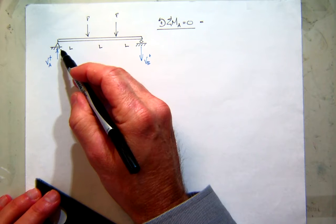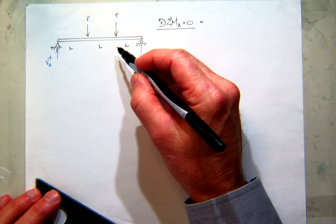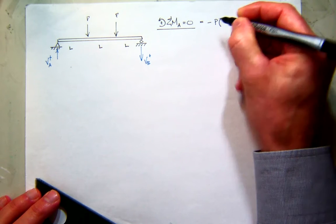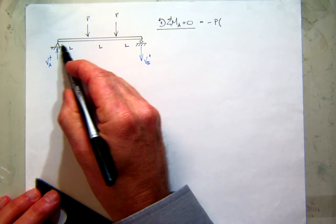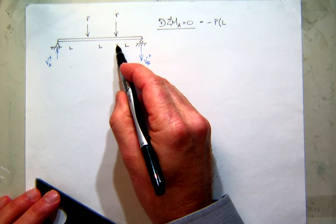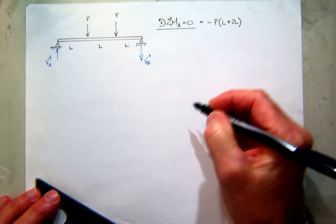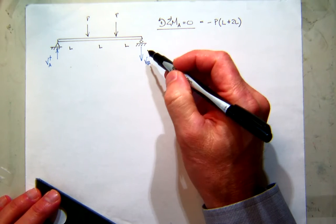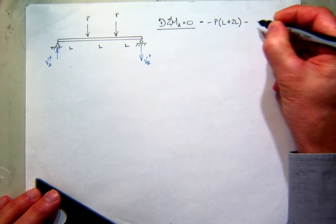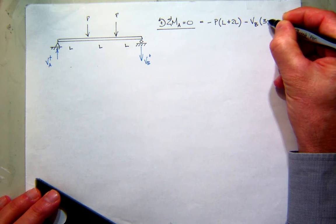Summing moments about A: both my applied forces, using the right-hand rule — what kind of moment are those going to be, positive or negative? Negative. So the force will be P. The first distance from A will be L, and the distance to the second force will be 2L. And then I'll have this reaction shear over here at B. What kind of moment does that create about A? Also negative. And that'll be the shear at B times its moment arm, which is 3L.